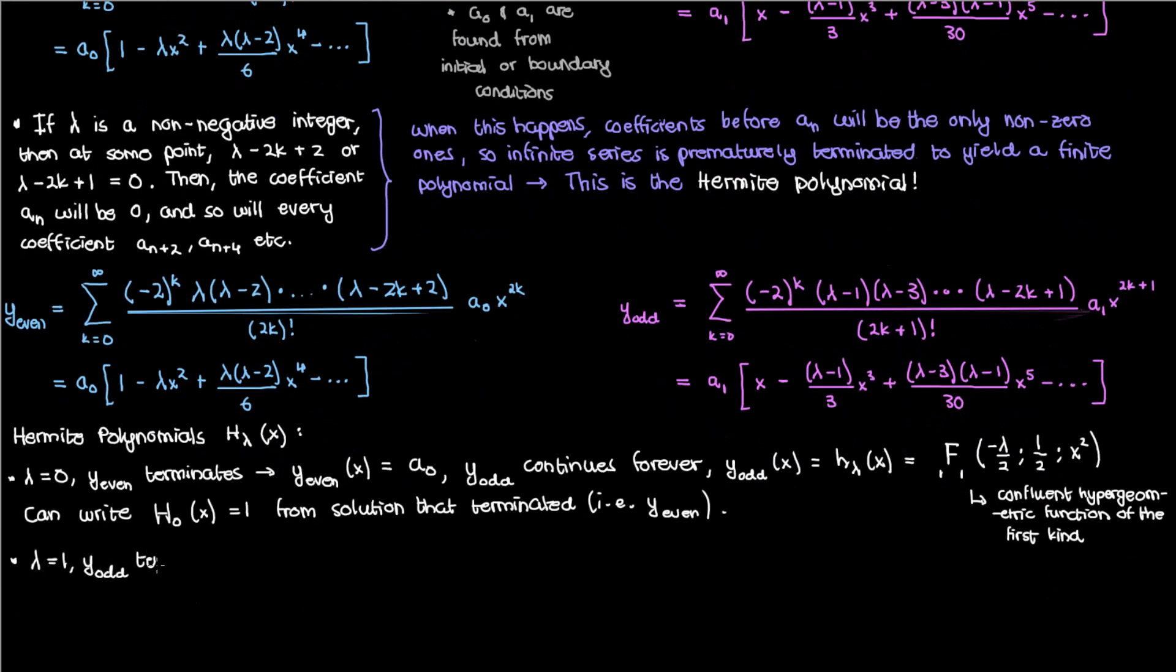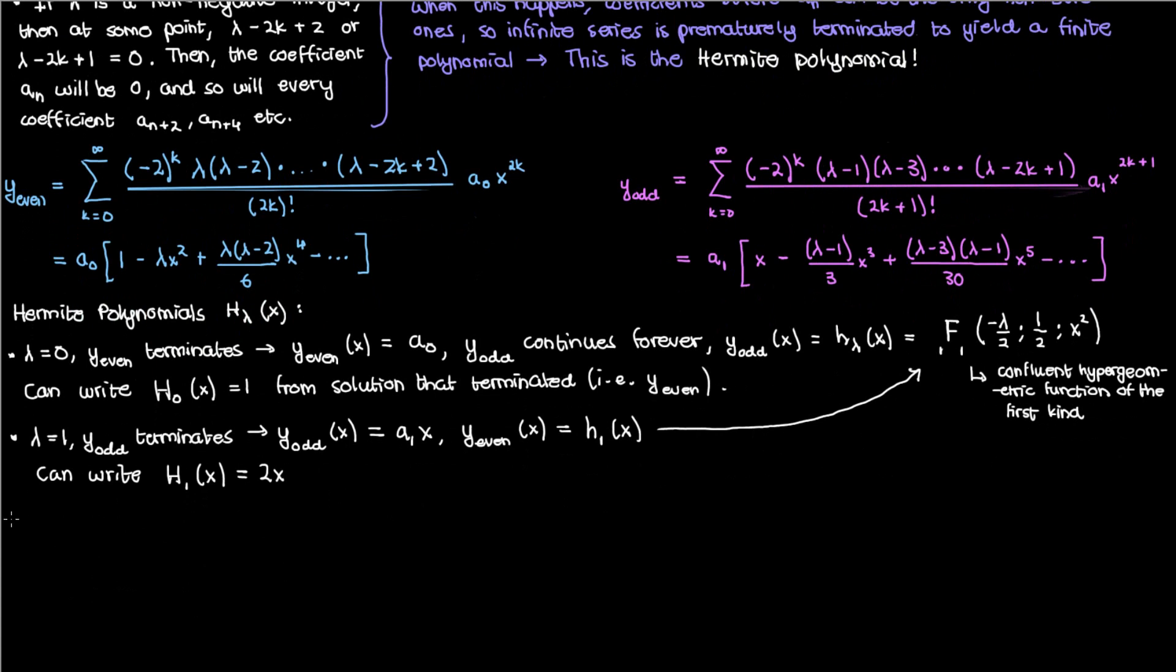Now let's look at the next Hermite polynomial. If we let λ equal 1, then this time our odd solution terminates, and we end up just with a_1x. Our even solution continues forever, and is again the confluent hypergeometric function of the first kind, but now corresponding to a λ of 1. Our first degree Hermite polynomial is then a constant multiple of a_1x. Conventionally we like to set a_1 equal to 2 for this Hermite polynomial, so H_1 is just 2x.